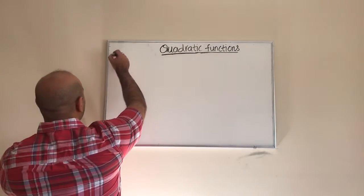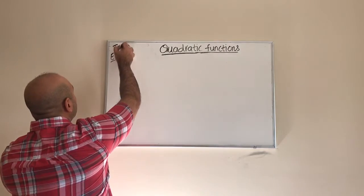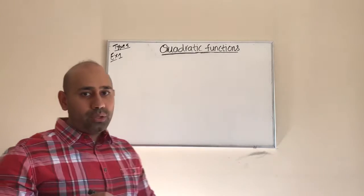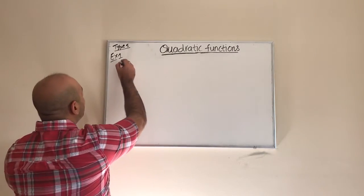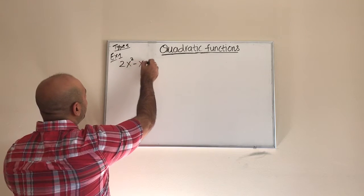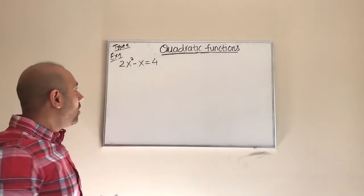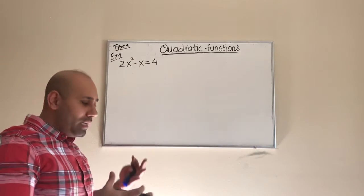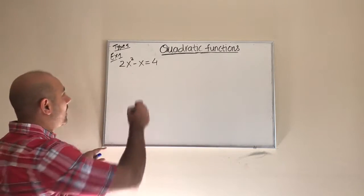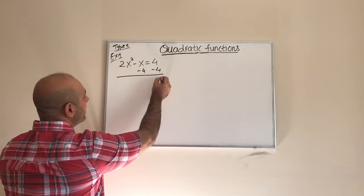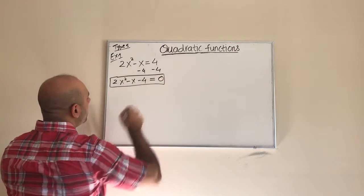Let's look at this example. We've covered four types already, and I would like to call this Type 5. I have the example 2x squared minus x equals 4 — it's a quadratic function and we want to solve for x. The first thing we do is bring everything to the left-hand side into standard form. Subtracting 4 from both sides gives 2x squared minus x minus 4 equals zero.